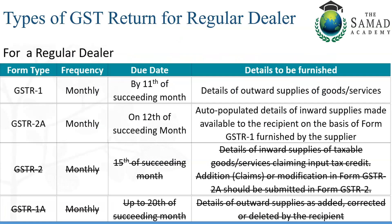First, let us understand the types of returns. A GST regular dealer files multiple returns. This was already discussed in the GSTR 1 returns video, but as a quick revision: GSTR 1 is filed by the 11th of the month, or quarterly if applicable, where all outward supply of goods and services invoices are uploaded on the portal. Based on that, once GSTR 1 is filed, the next day — after the 11th — GSTR 2A report is generated.